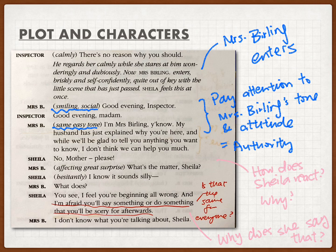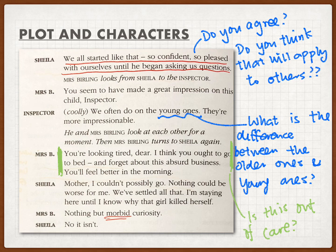Mrs. Birling didn't understand, so Sheila tried to explain — saying that everyone started like that: Mr. Birling said it wasn't his fault, and Sheila said it wasn't her fault in the beginning, both so confident and pleased. But after the inspector questioned them, they realized their own problems. That's why Sheila believed Mrs. Birling shouldn't pretend to not know anything or be too proud and confident.